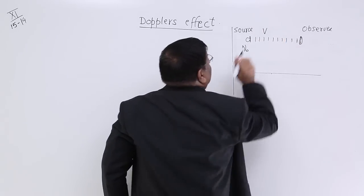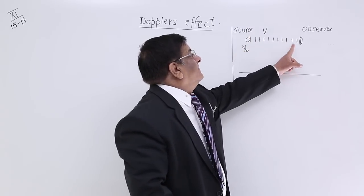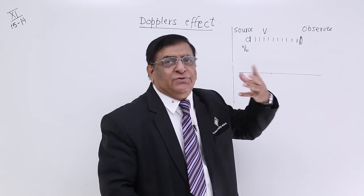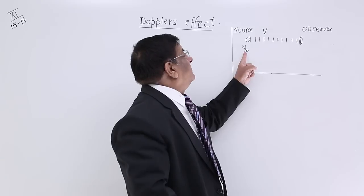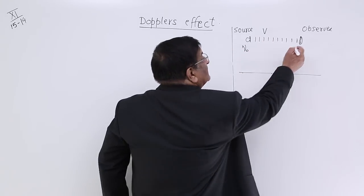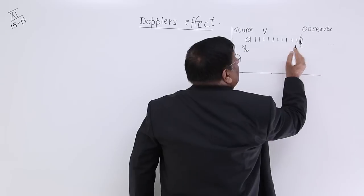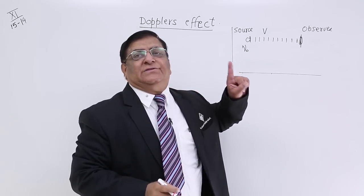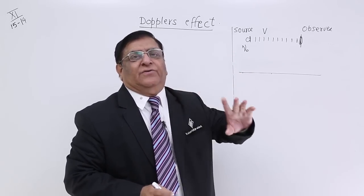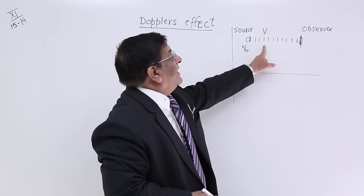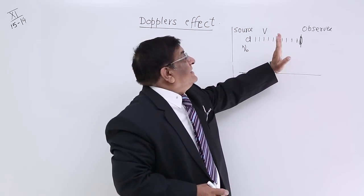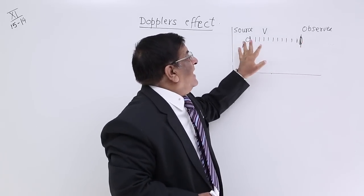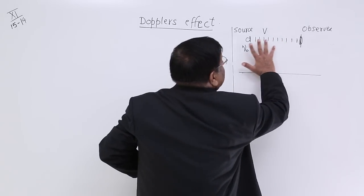Let that velocity be V. The waves are going here. In one second, how many waves are going? Nu-zero. Suppose, for one example, there are 10 waves going in one second. Here is an observer who is interacting with the waves — he is a listener. He listens to the waves through his ears. So, into his ears, how many waves are entering per second? 10 waves are entering. He stays here, stable, stationary. Every one second, 10 waves are entering his ears.